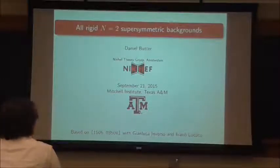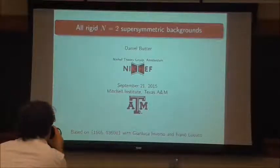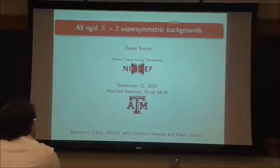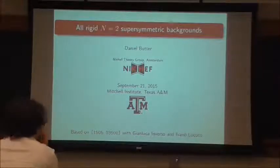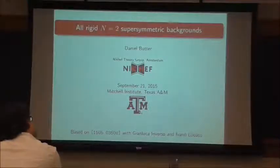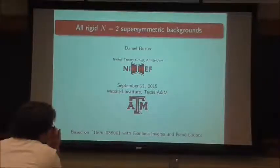My title is a bit of propaganda. I claim this is all rigid and able to do supersymmetric backgrounds. I'll actually talk a little bit about actions also, time permitting, but I should also warn you that all should probably have an asterisk on it. What I'm actually going to be discussing are all global backgrounds. There are certainly possibilities of doing discrete quotients that aren't included in the classes that we're talking about here, which I'll get to when I get there.